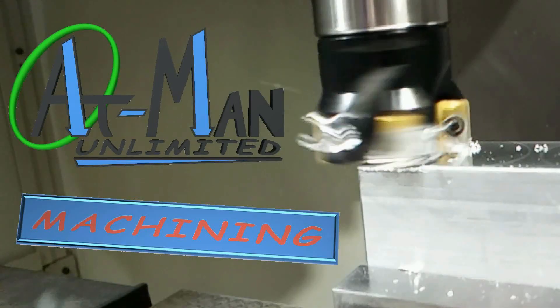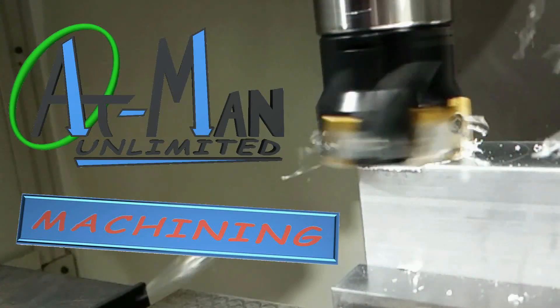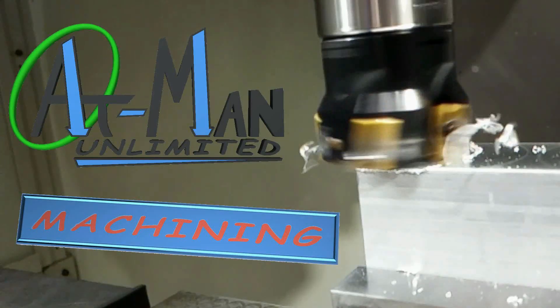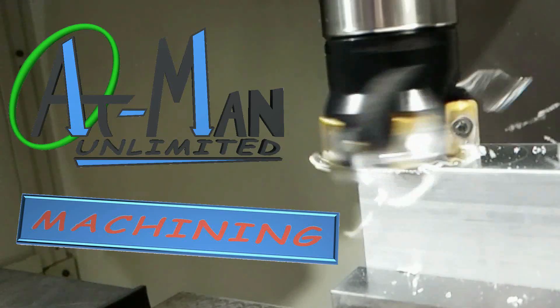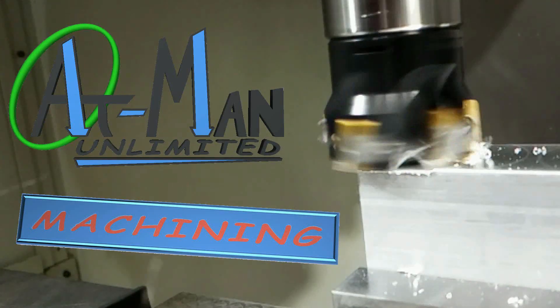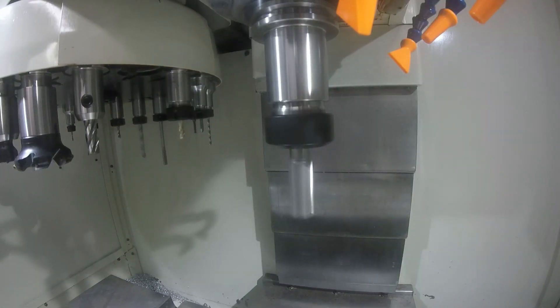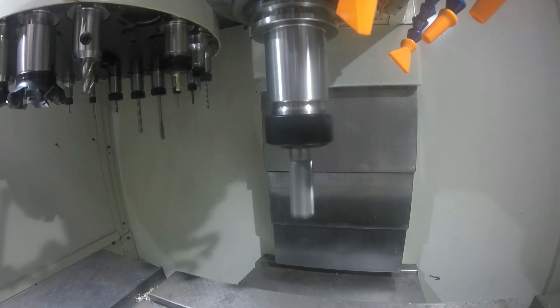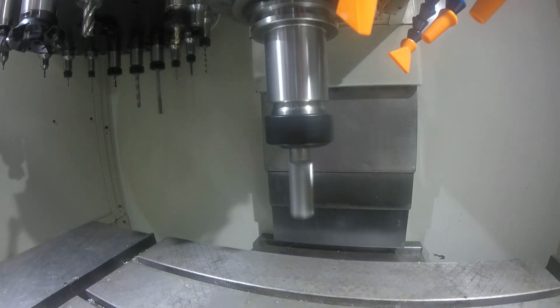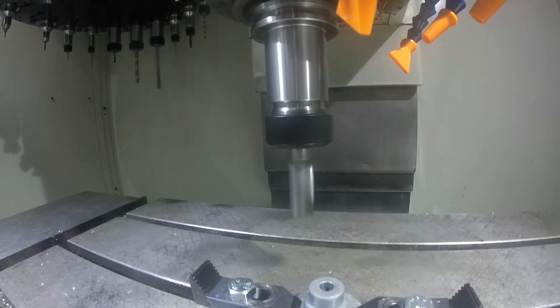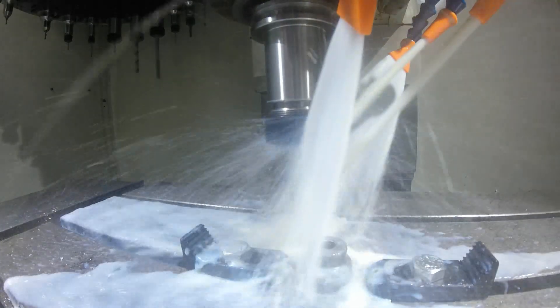Hello everybody and welcome back to Atman Unlimited. Let's make some chips today. For our first operation we're going to machine the existing part and put those two flats on it. We just flat clamped it right down to the table and then we're just going to run circles around it.